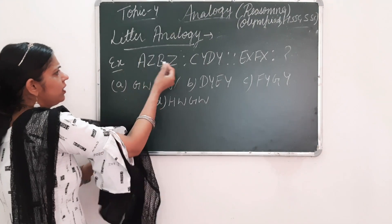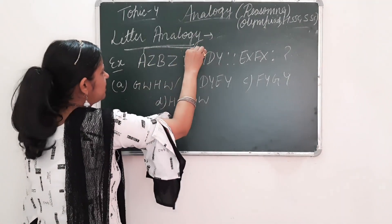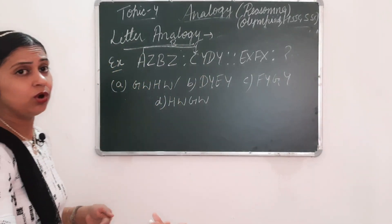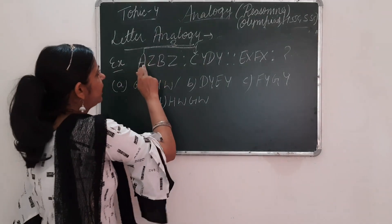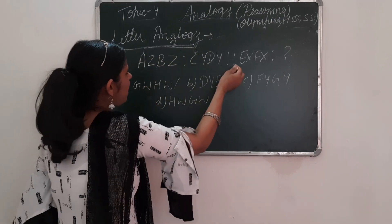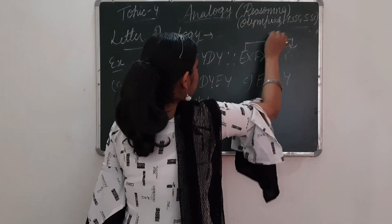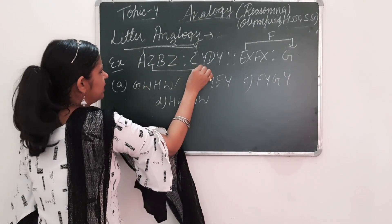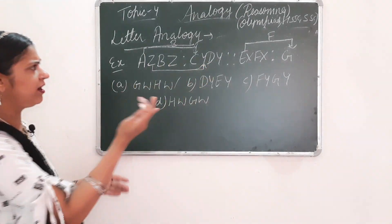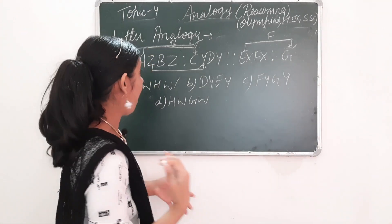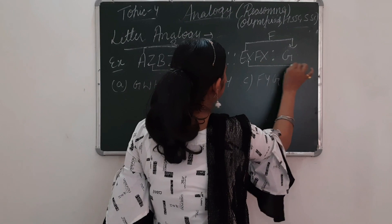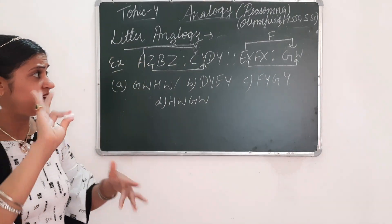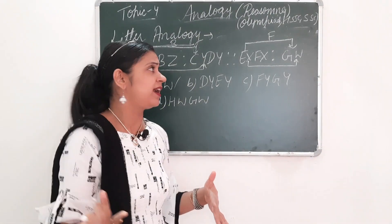Suppose we moved A forward by 2 letters to get C. As I explained, you move letters forward or backward. So A → B → C. Now if we move E forward by 2 letters: E → F → G. So the first letter becomes G. Similarly, Z moved one letter backward gives Y, and X moved one letter backward gives W. So we write W, X, Y, Z.